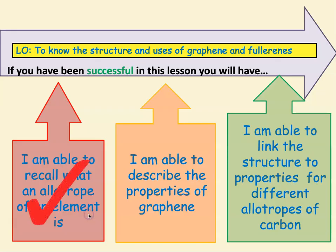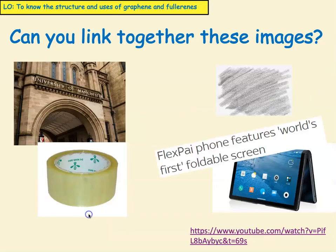That is our first success criteria on allotropes. So now we're going to look at graphene. Can you link these images together? Pause the video now and copy the YouTube link — that's going to tell you something about a new substance — and come back when you've done that. Hopefully you enjoyed that video. It told us about a substance called graphene.